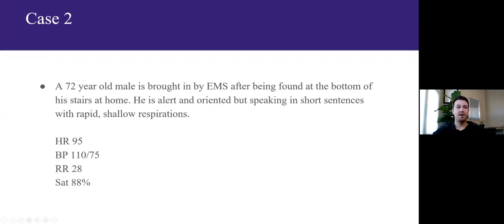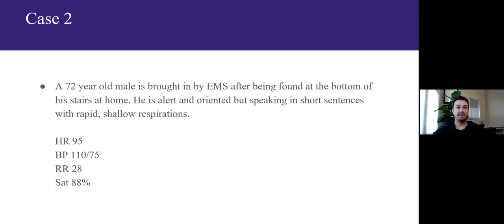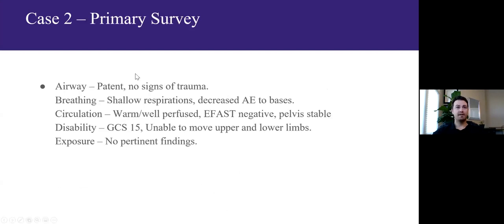Let's apply one more case. Case 2: a 72-year-old male brought in by EMS, found at the bottom of stairs at home. He's alert and oriented but speaking in short sentences with rapid shallow respirations. Heart rate 95, blood pressure 110/75, tachypneic and hypoxic. Primary survey: no signs of airway trauma but shallow respirations and decreased air entry to the bases. He's warm and well-perfused, FAST negative, pelvis stable. Neurologically, he's not moving his upper or lower extremities.